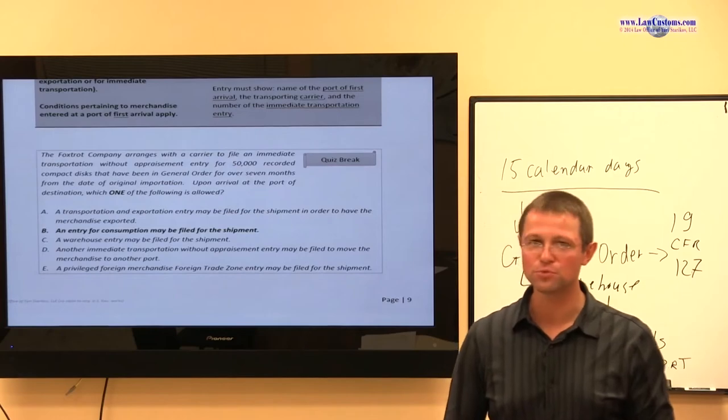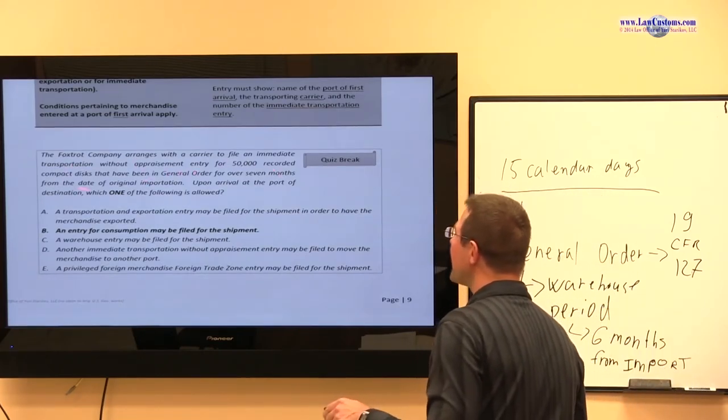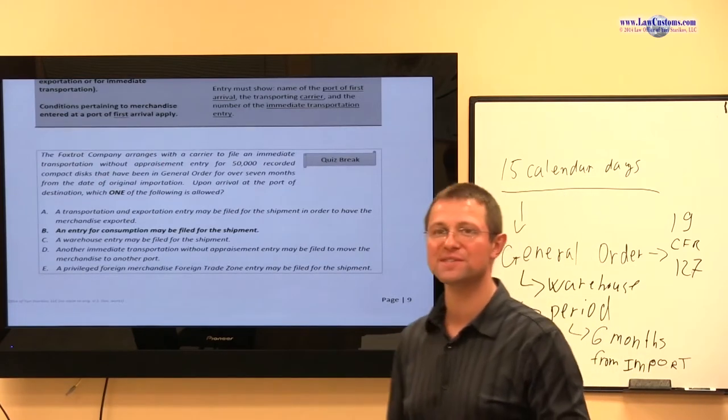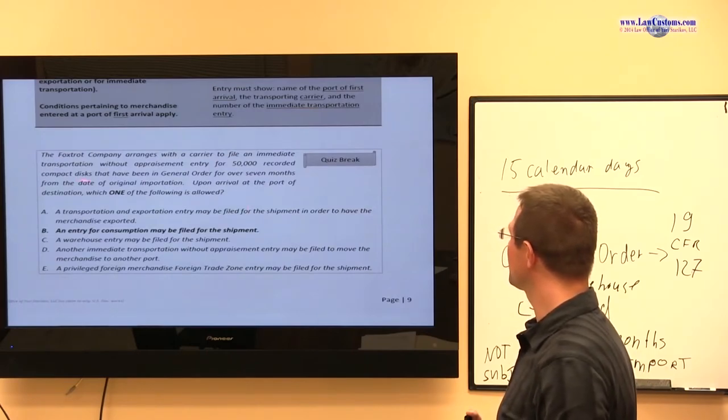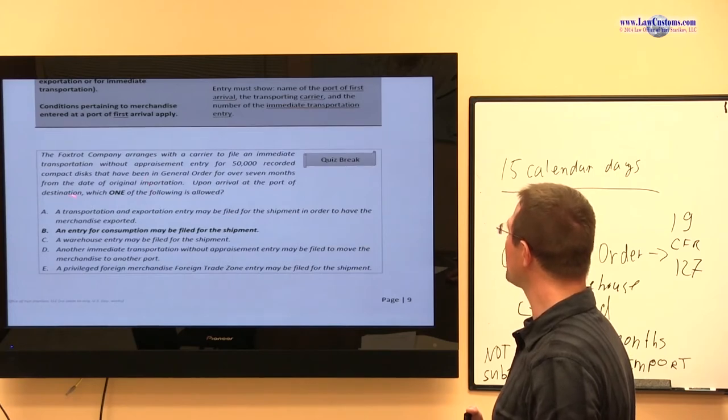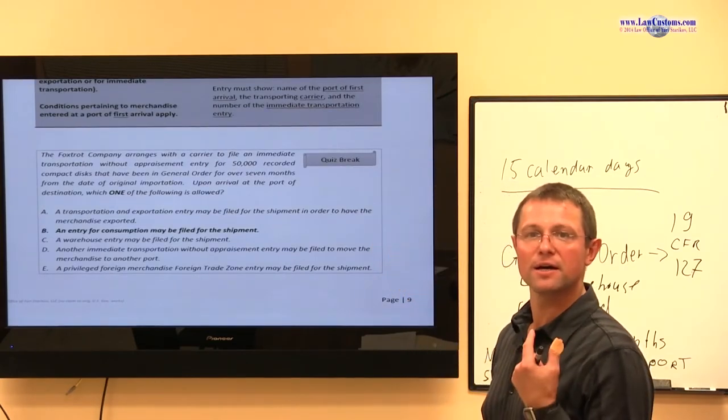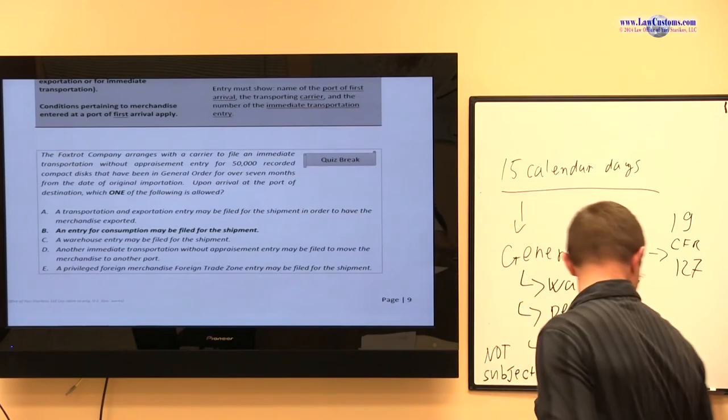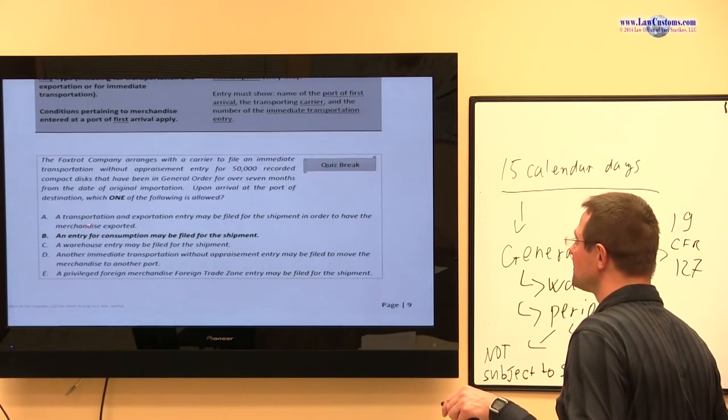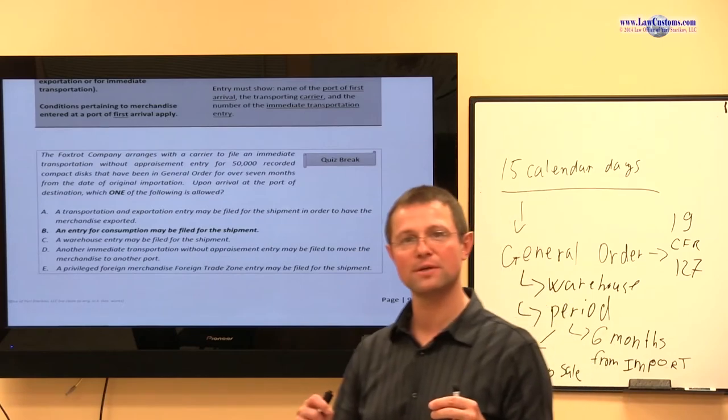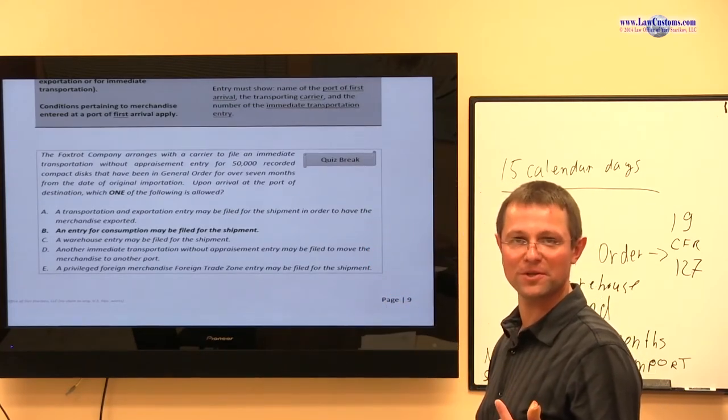So, the only permissible entry type for the stuff that stayed more than six months and became outside of the general order period, only consumption entry is permissible. And customs examiners do test on this very easily. The Foxtrot company arranges for a carrier to file an IT without appraisement for 50,000 CDs. They have been in general order for over seven months, seven months from the date of original importation. Upon the destination at the port, upon arrival to the port station, what can you do? So, of course, the question is, can you avoid the consumption? And the answer is no, because the only thing you can do with it is consumption only, right? You cannot do exportation.